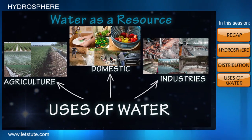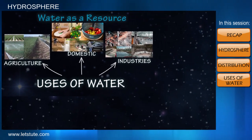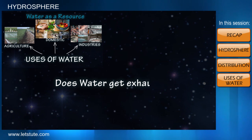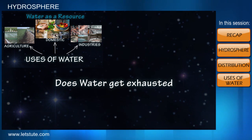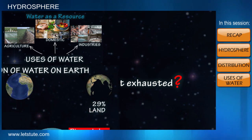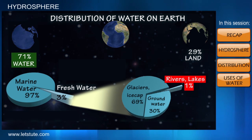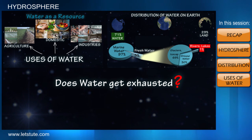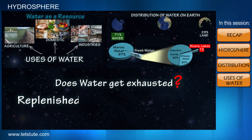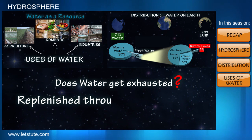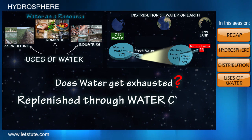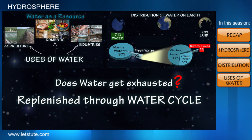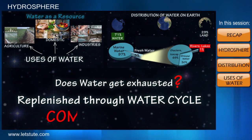Friends, we saw that water has many different uses. But does all this water get exhausted as we use it? If that is the case, how is the percentage of water on Earth maintained? Water is replenished or recycled through a natural process called the water cycle, which we will be studying in our coming session.